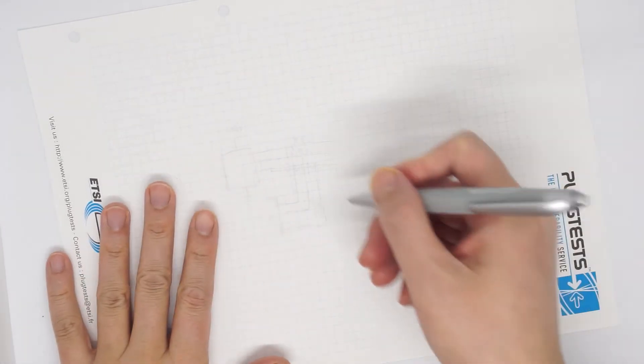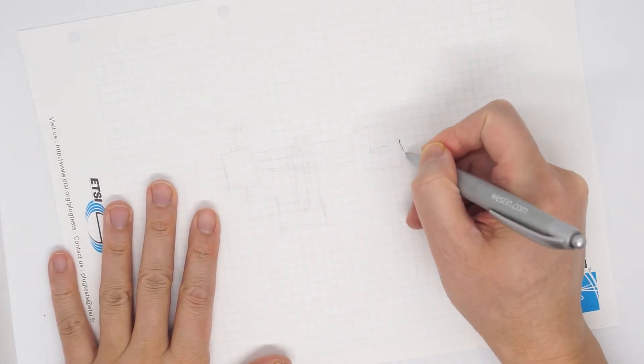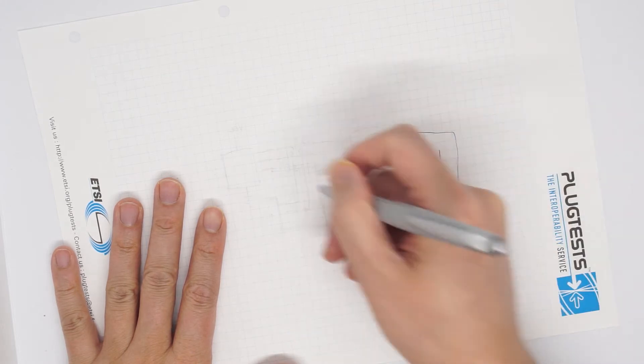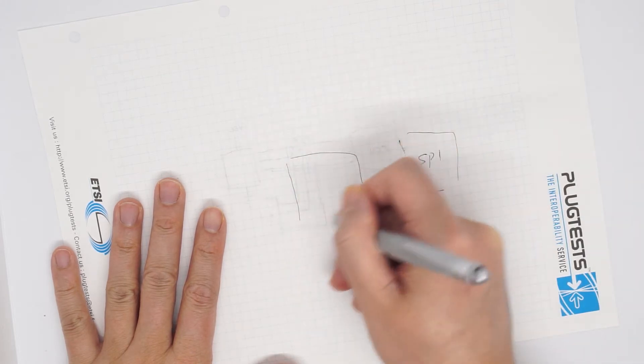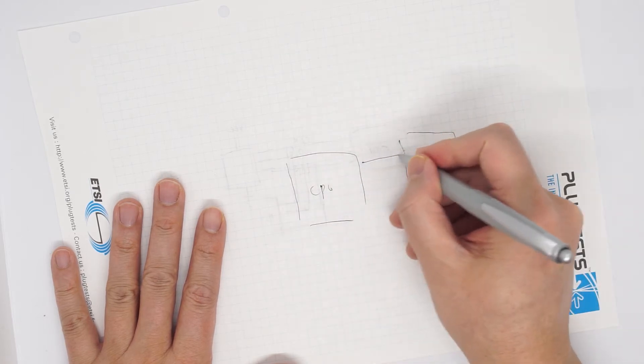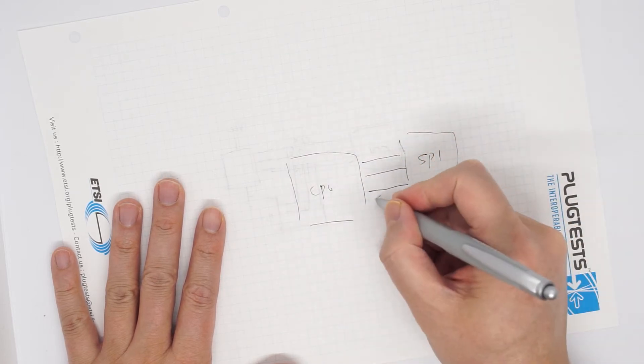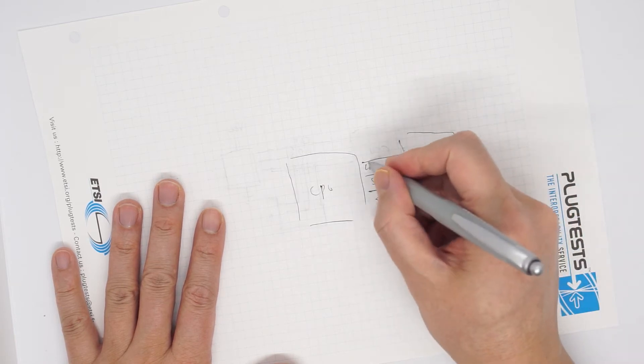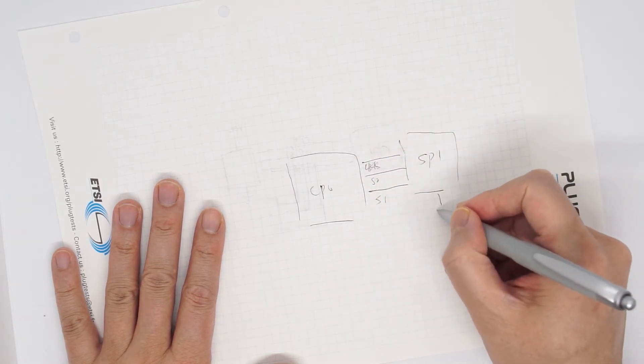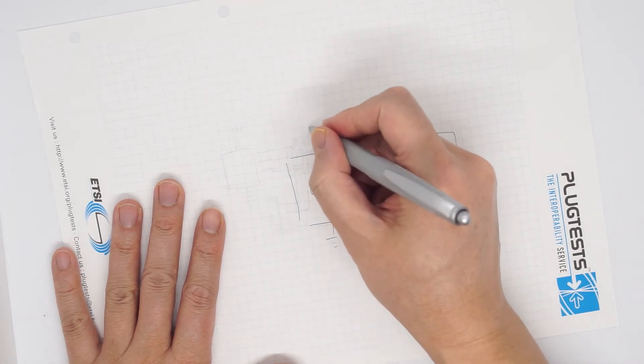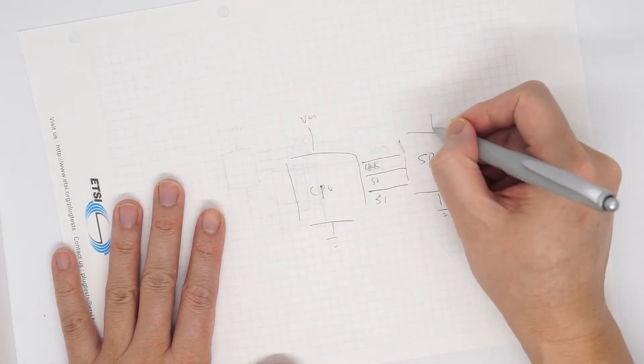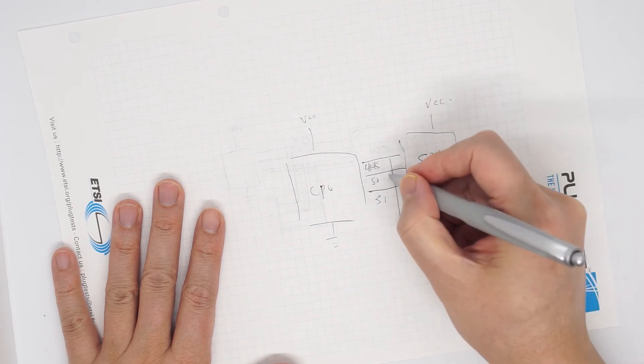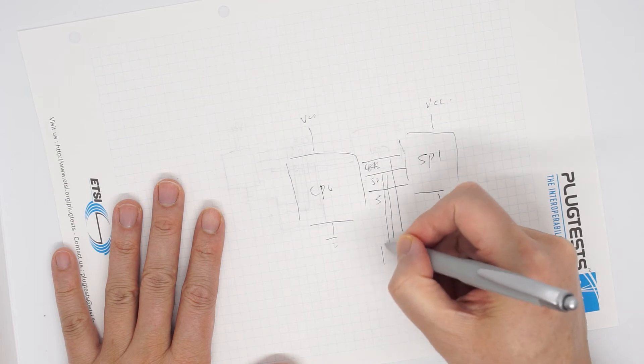I will draw a diagram typically on the board. Let's say this is SPI chip and this is the CPU on the board. They have signals, SISO clock and this is ground, ground and VCC, VCC.